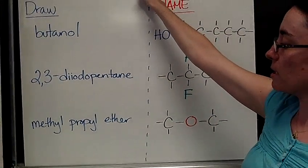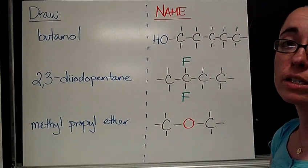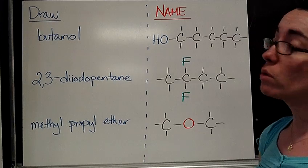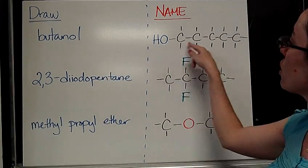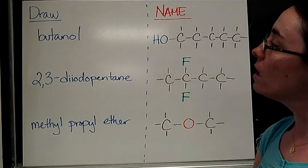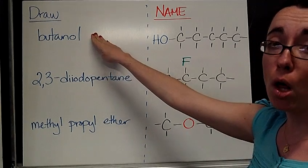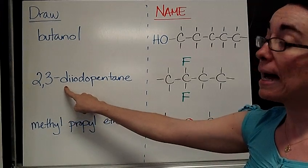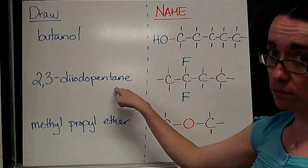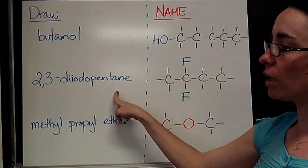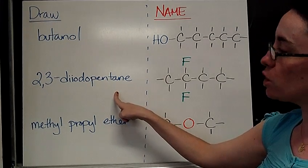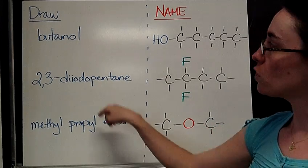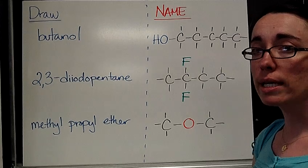And now that my boards have stopped attacking me, let's take a look at what I'd like you to do for homework. In this column we're going to draw. So you're going to take the name and you're going to translate it into a structure. So I'd like you to draw me butanol. That's an O-L at the end. I would like you to draw me 2,3-diiodopentane. You may want to refer to table R to help you translate that name into a structure. And finally, methyl propyl ether. So you'll have three structures that I would like you to draw.